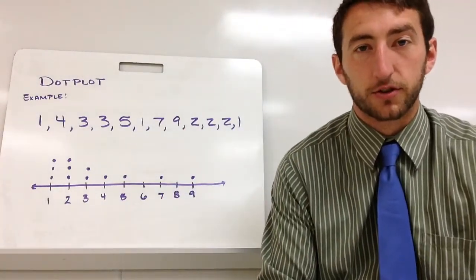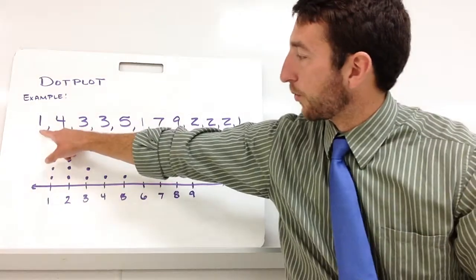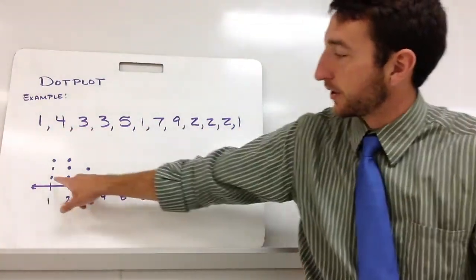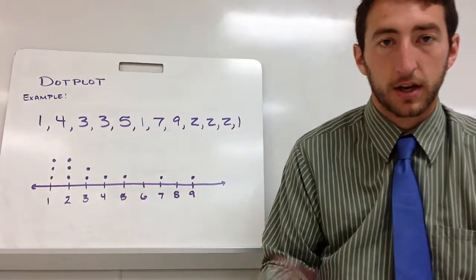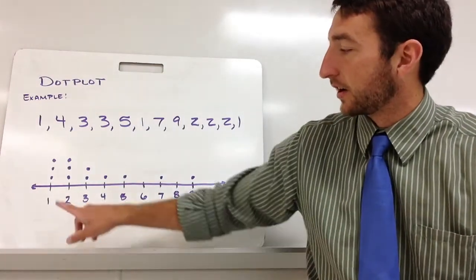Every time that number falls in your data set, you put a dot. So I have a one there, a one there, a one there. So I've got one, two, three dots. That represents the three ones that I have in my data set.